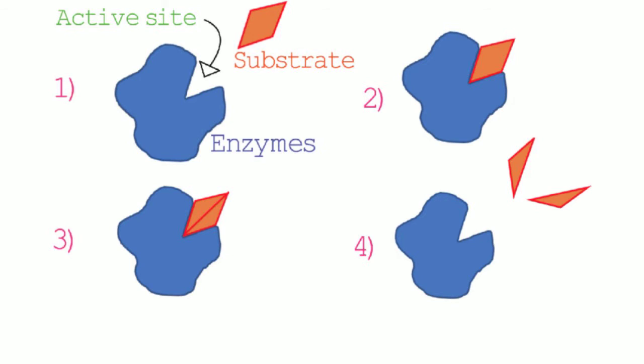An enzyme is a biological catalyst, and a catalyst is a chemical that speeds up the rate of a reaction without being used up in the reaction. A molecule that an enzyme acts on is called a substrate. Usually enzymes only catalyze one reaction, and this means that they have an active site that is specific for the substrate that they are acting upon.